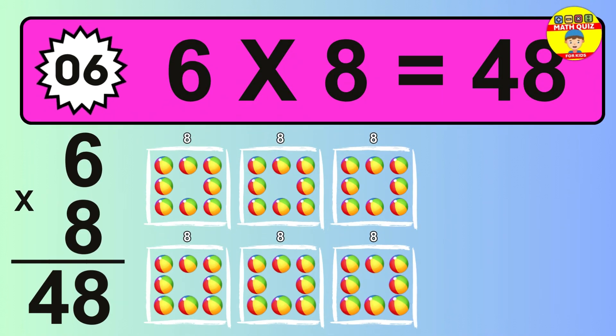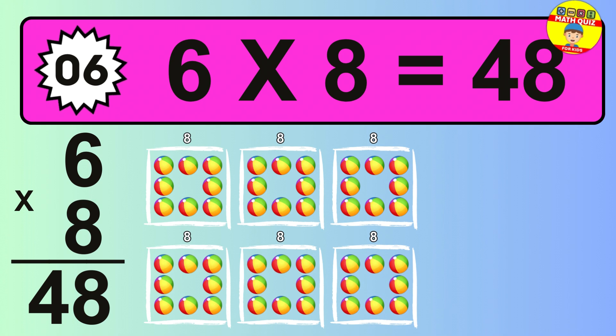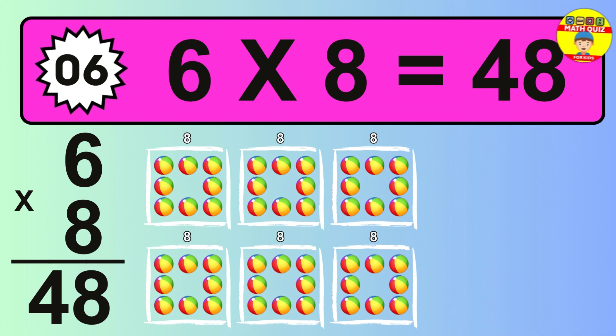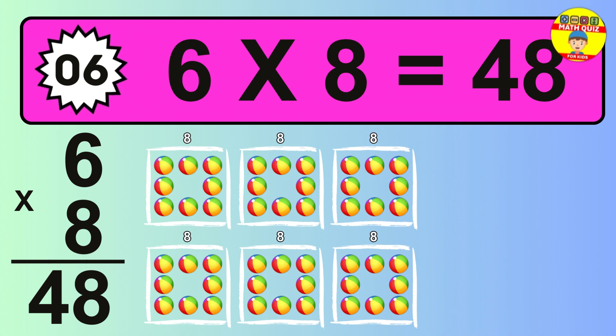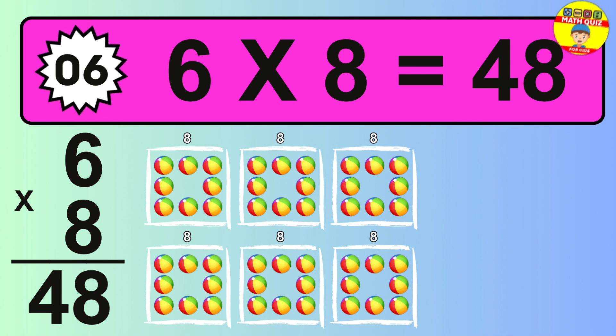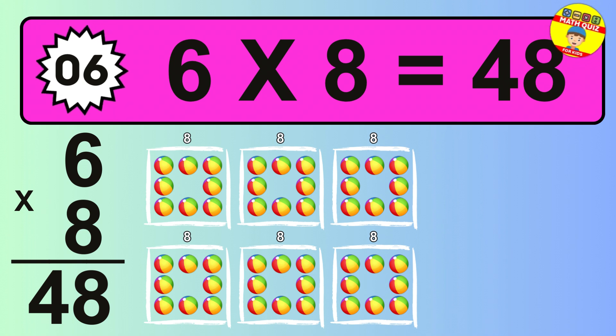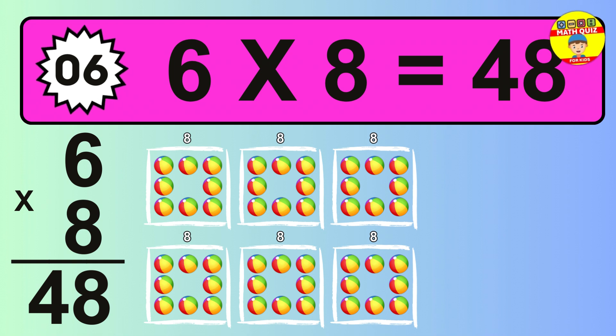The answer is 6 times 8 is 48. To calculate, we have 6 groups with 8 balls each one. So, how many balls do we have? 48 balls.